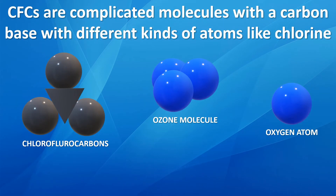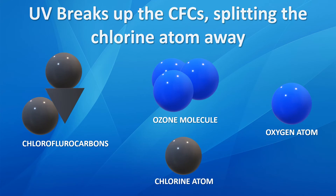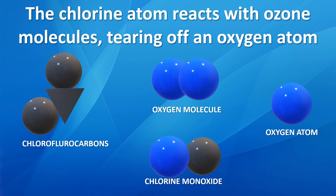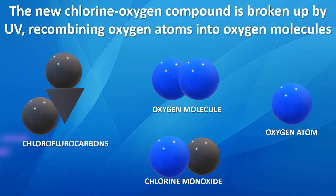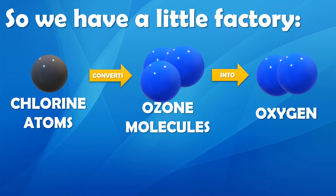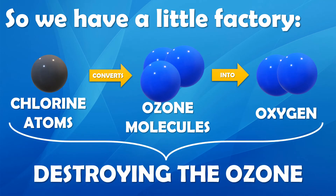CFCs are complicated molecules with a carbon base with different kinds of atoms attached, like chlorine. UV breaks up the CFCs, splitting the chlorine atom away. The chlorine atom reacts with UV-blocking ozone molecules, tearing off an oxygen atom and creating UV-vulnerable oxygen molecules. The new chlorine-oxygen compound is then broken up by UV, and will eventually recombine oxygen atoms into oxygen molecules, which don't block UV. In the end, you've got a little factory — chlorine atoms convert UV-blocking ozone molecules into UV-vulnerable oxygen atoms, a process that destroys the ozone and dismantles the Earth's natural protection.